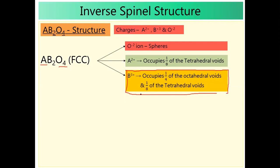In anti-spinal: out of four octahedral voids, we use one only — represented by 1/4 of octahedral voids. Out of eight tetrahedral voids, we have only one B in tetrahedral — represented by 1/8 of tetrahedral voids. A²⁺ still occupies 1/8 of tetrahedral voids. So: 1 tetrahedal void of B³⁺ + 1 octahedral void of B³⁺ gives two B³⁺ ions. Spinal and anti-spinal both contain one A²⁺, two B³⁺, and four O²⁻, but the position of B³⁺ is changed in the inverse spinal.